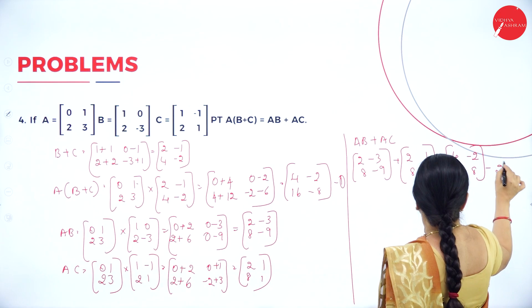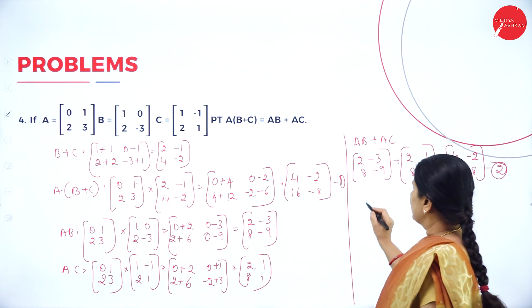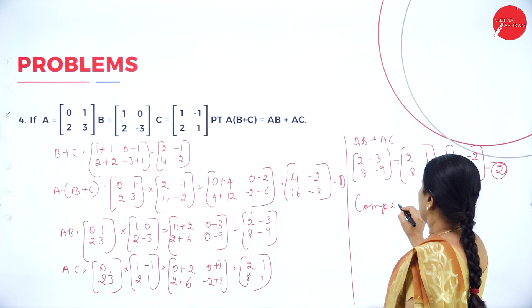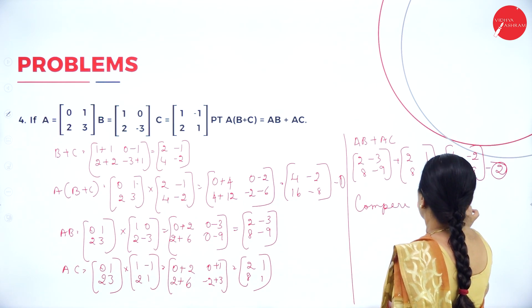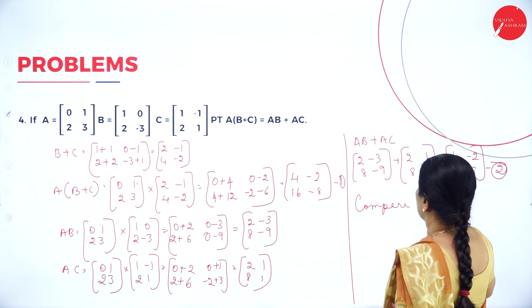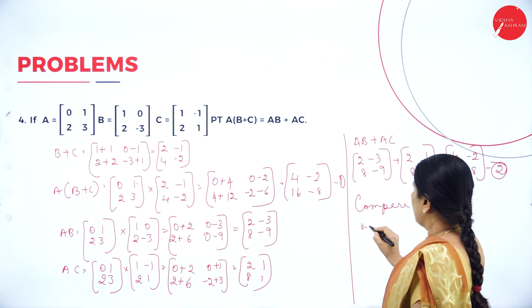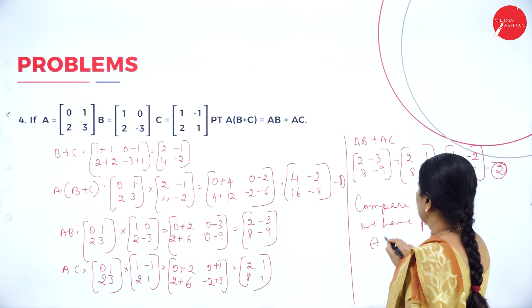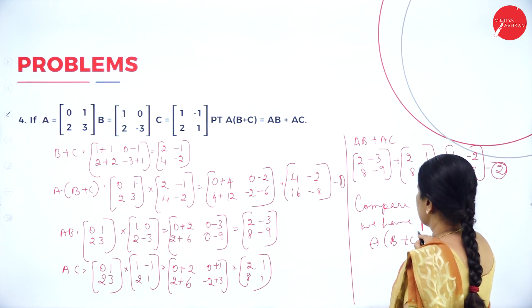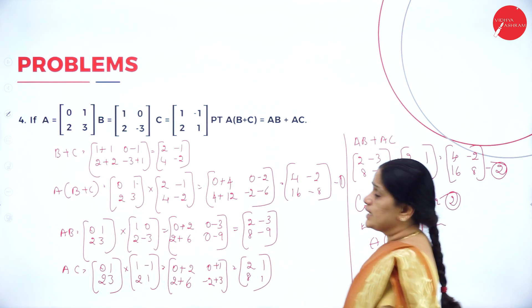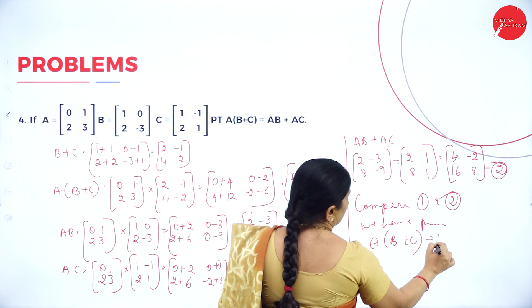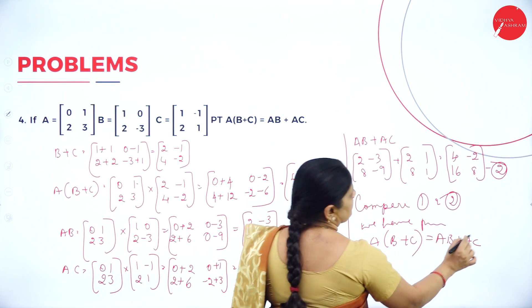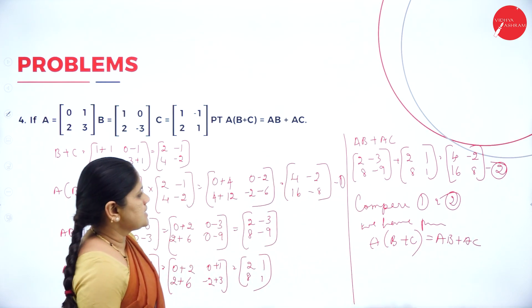Comparing result 1 and result 2, we have proved that A(B+C) equals AB plus AC. This is the answer.